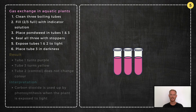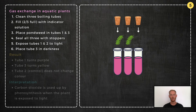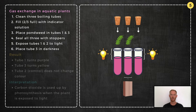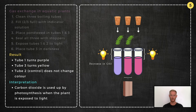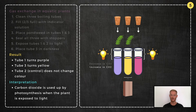Experiment 5: Investigate the effects of light and dark conditions on gas exchange in an aquatic plant. Clean three boiling tubes with distilled water and fill with hydrogen carbonate indicator solution. Place three equal-sized pieces of pondweed in tubes 1 and 2, and seal all three with stoppers. Expose tubes 1 and 3 to light for 24 hours, and place tube 2 in a dark cupboard. The solution in tube 1 turns purple, indicating that carbon dioxide has been used up through photosynthesis. The solution in tube 2 turns yellow, indicating a net increase in carbon dioxide — because no photosynthesis occurs in the dark, while CO₂ is still released by respiration. The control does not change colour, confirming that it is the plant causing the colour change.